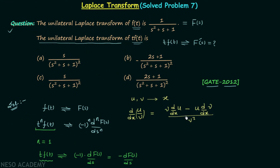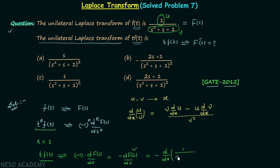Following this rule, we perform our differentiation. We know F(s) = 1/(s² + s + 1), which makes u = 1 and v = s² + s + 1. So we are evaluating minus the derivative with respect to s of 1/(s² + s + 1).